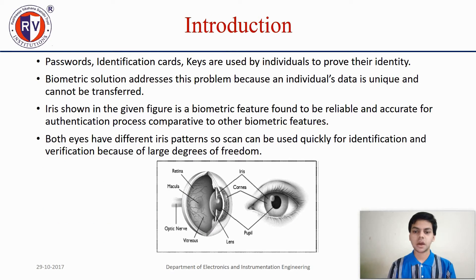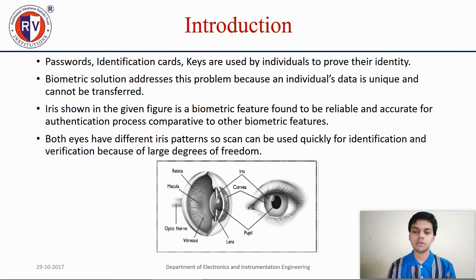Passwords, identification cards, and keys are used by individuals to prove their identity. Biometric solutions address this problem because an individual's data is unique and cannot be transferred. The iris, shown in the given figure, is a biometric feature found to be reliable and accurate for authentication, and both eyes have different iris patterns, so scans can be used quickly for identification and verification because of large degrees of freedom.